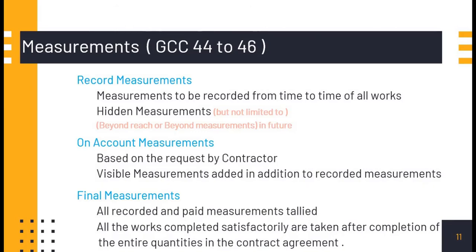Record measurements are to be recorded from time to time for all works. Whenever a piece of work has been completed satisfactorily and qualifies for payment, it can be measured and recorded in the measurement book. Hidden measurements — those beyond reach or getting hidden beneath ground level, for example foundations — must be measured and recorded. These need to be submitted for technical check by the Assistant Divisional Engineer.